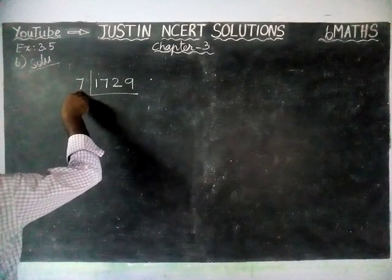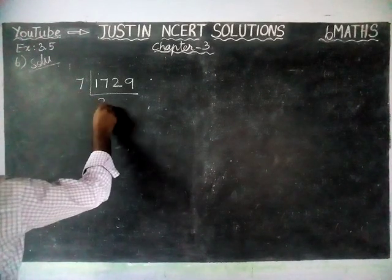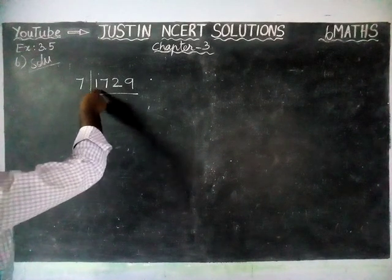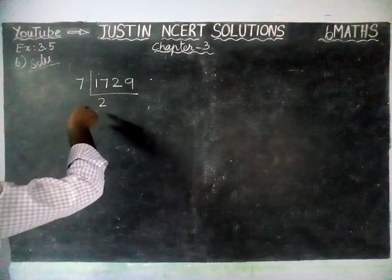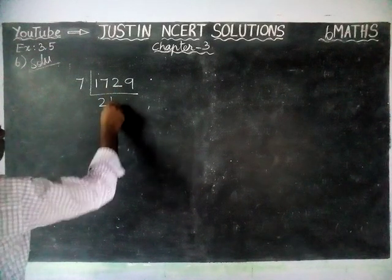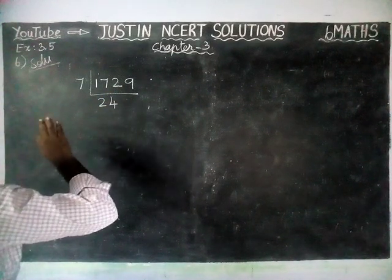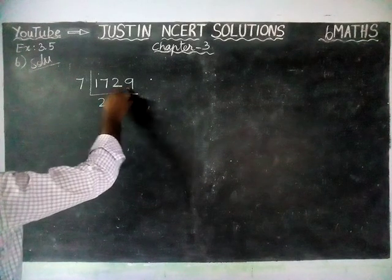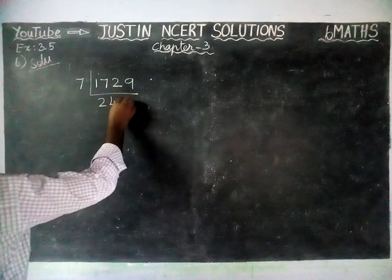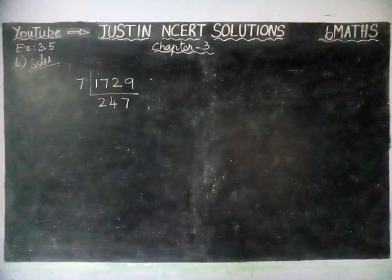We will check it. Two 7s are 14, remaining 3. So now 32 — in 32, four 7s are 28, remaining 4. Now 49 — seven 7s are 49. So 1729 divided by 7 gives us 247.